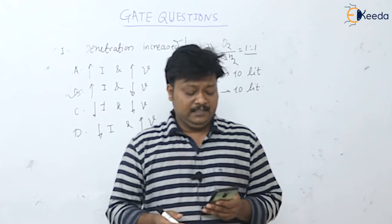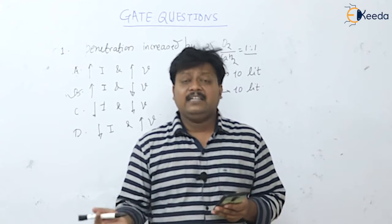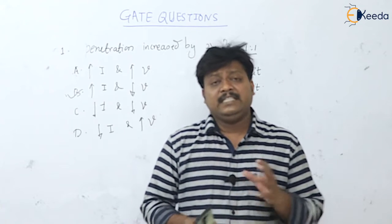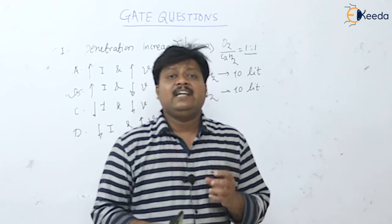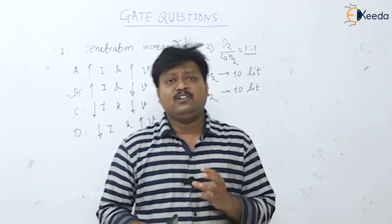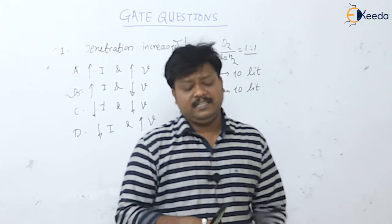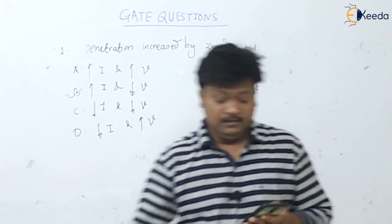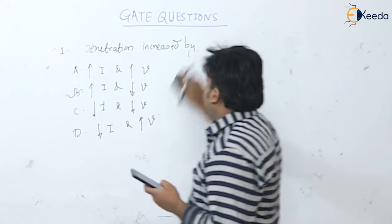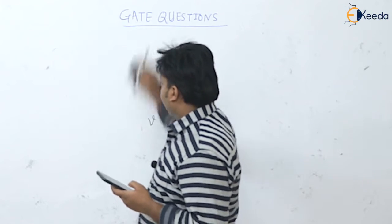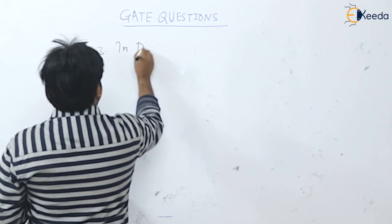For 1.5 mm steel sheet, 10,000 amperes is the correct answer.